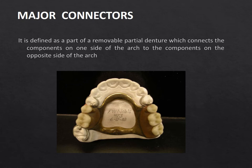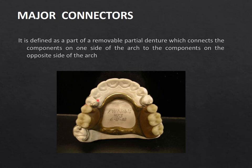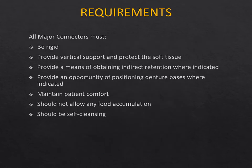A major connector is defined as a part of the RPD which connects the components on one side of the arch to the other side. It is the heart of a removable partial denture — the major construction element that forms the bulk of the RPD metal framework. It connects rests, reciprocal arms, direct retainers (clasp assemblies), saddles, minor connectors, and all retainers anterior to the fulcrum line.